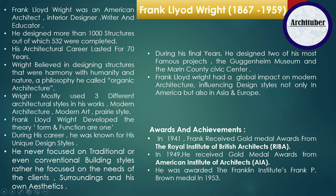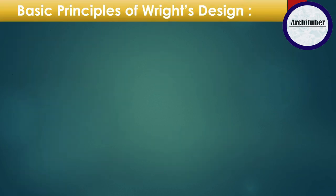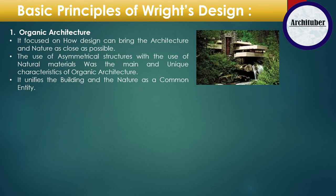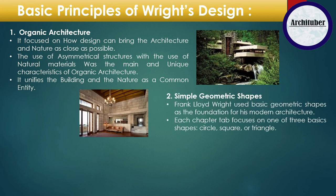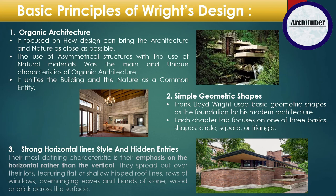Now let's get to know more about his working principles. There are three basic principles that Wright used to work with. First is organic architecture — he focused on how design can bring architecture and nature as close as possible. Second, simple geometric shapes — Wright used basic geometric shapes as the foundation of his modern architecture. Third, his most defining characteristic is the emphasis on the horizontal rather than the vertical plane.